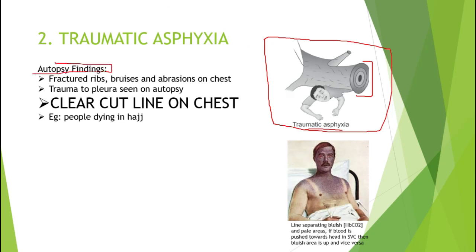The autopsy findings here are specific ones; non-specific findings will be found in every type of asphyxia, including edema, congestion, abnormal fluidity of the blood, and petechial hemorrhages. Specific findings include trauma to the chest — fractured ribs, bruises, and abrasions on the chest. Trauma to the chest will also lead to trauma to the pleura, which will be visible when the chest wall is opened at autopsy.